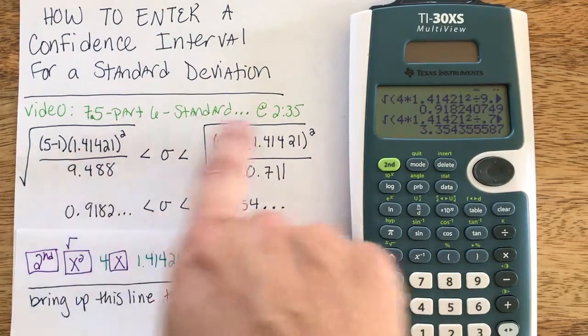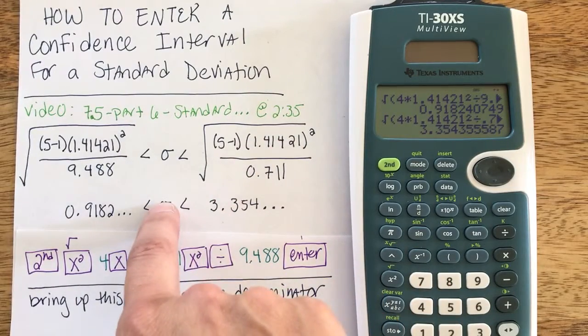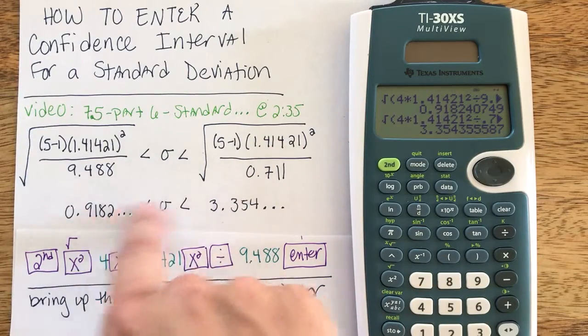Remember, s, your sample standard deviation, should be less than your upper limit but greater than your lower limit, somewhere in there.